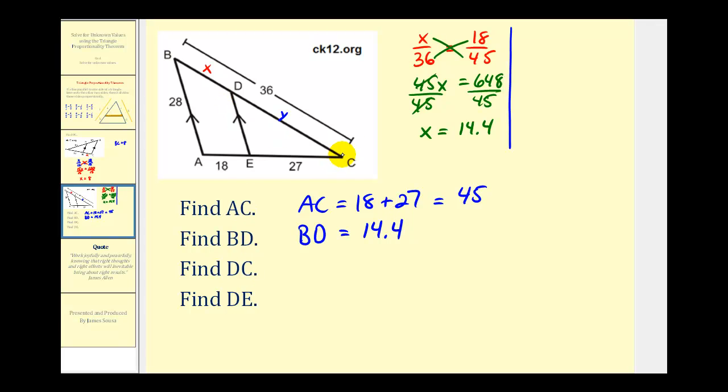Now to determine the length of DC, we have a couple of options here. Let's go ahead and use the length of BD, which we just found as 14.4. So 14.4 to Y must equal 18 to 27. Again, we'll cross-multiply. 18 times Y would be 18Y, must equal 14.4 times 27. That's going to give us 388.8.